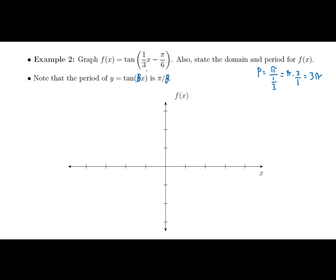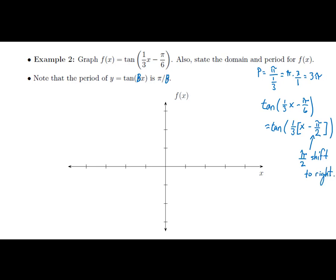The argument is not yet factored, so the minus π/6 is not the true shift. We need to factor out 1/3: tan(1/3·x - π/6) = tan(1/3·(x - π/2)). So 1/3 times π/2 gives π/6, confirming the factoring. The true horizontal shift is π/2 to the right.